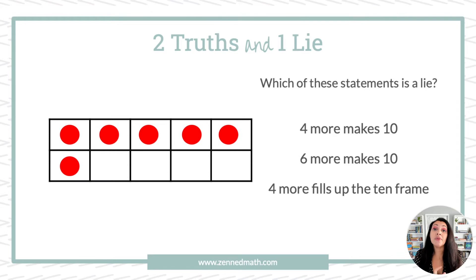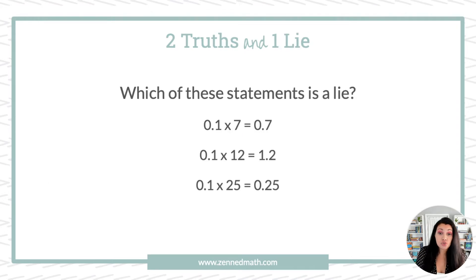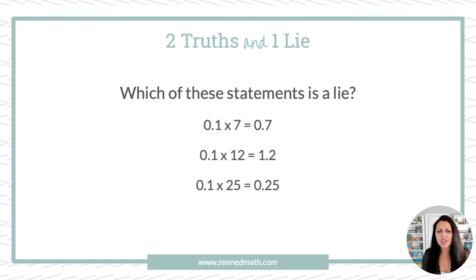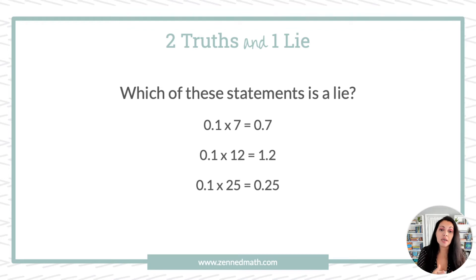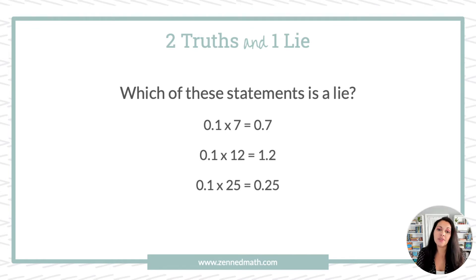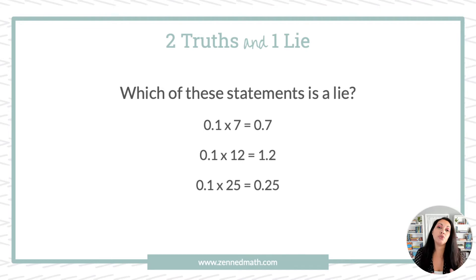The next variation is straight-up equations. Which one of these equations is a lie? Hopefully you can see that the last one — one-tenth times 25 — the answer should be two and five-tenths instead. So that last statement is a lie. We can have an activity where it is just equations or expressions and students are finding truths and lies.